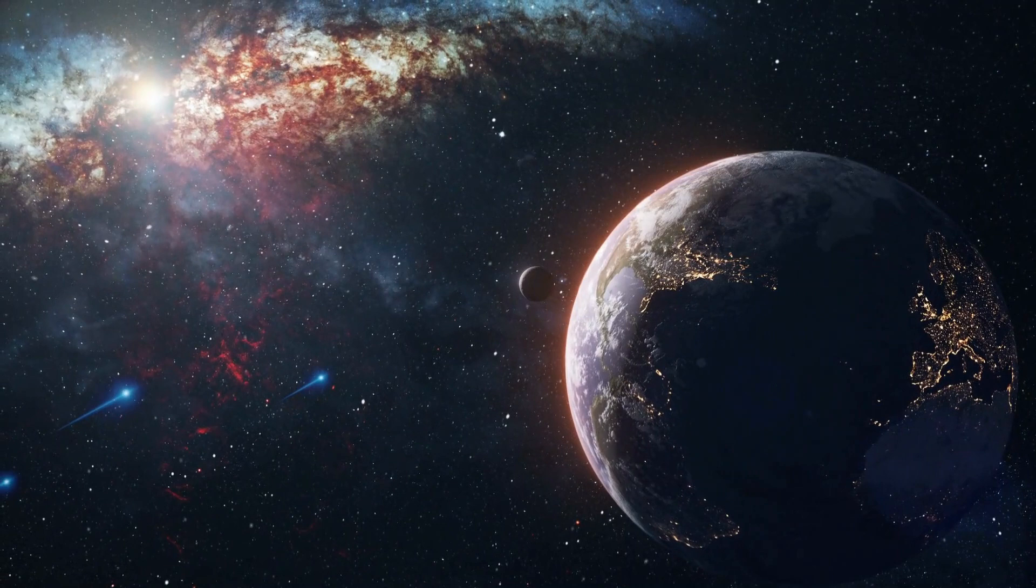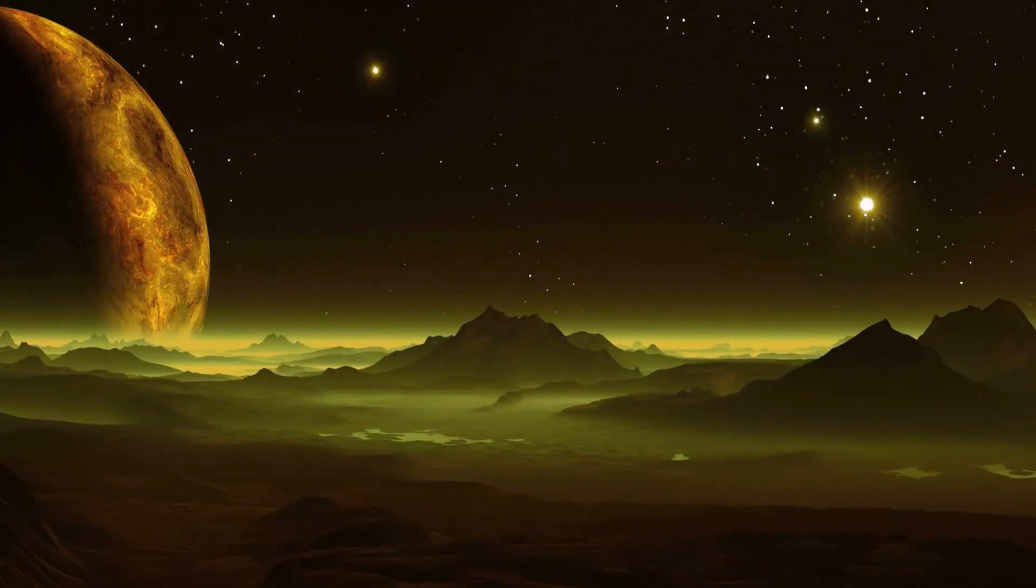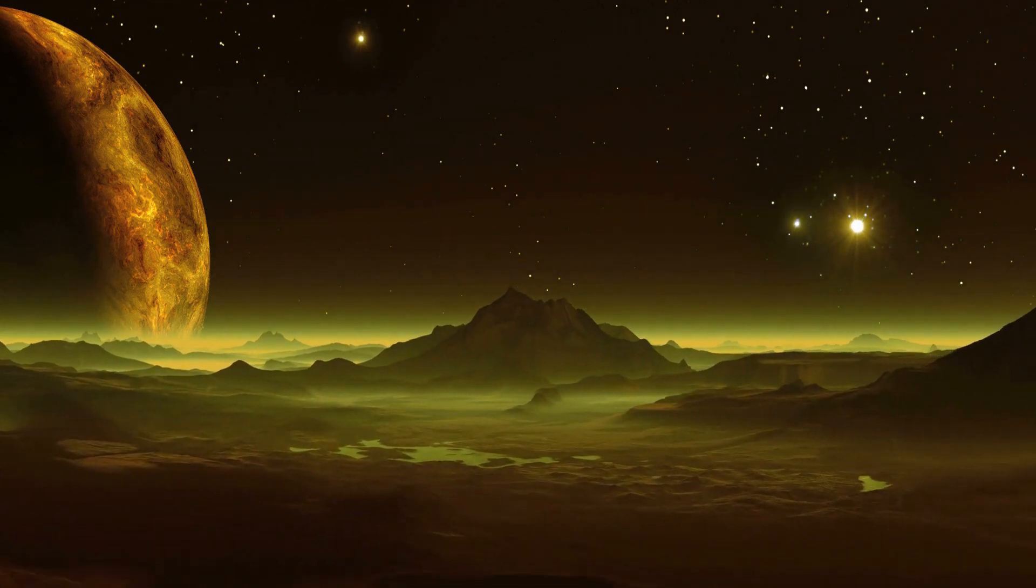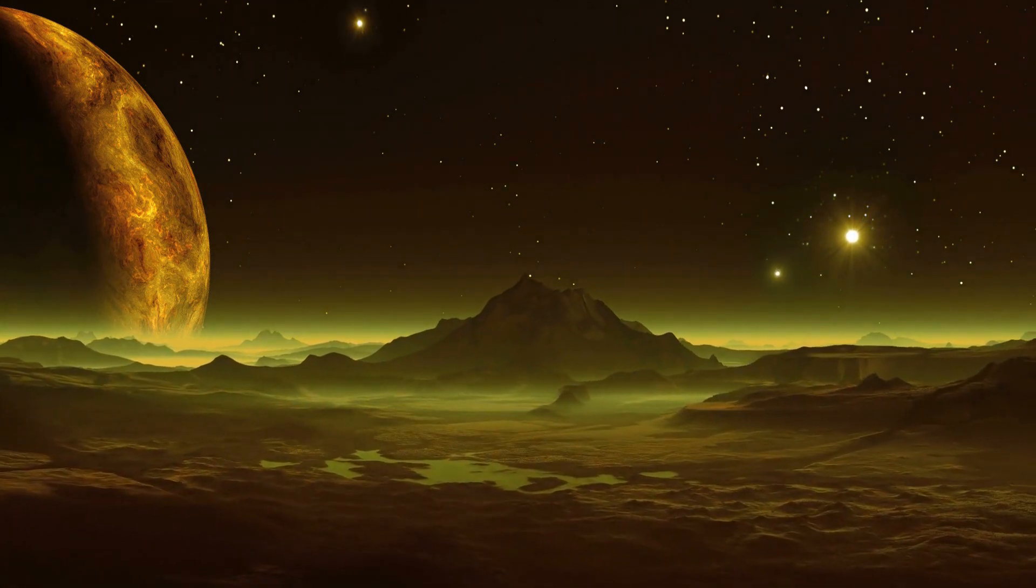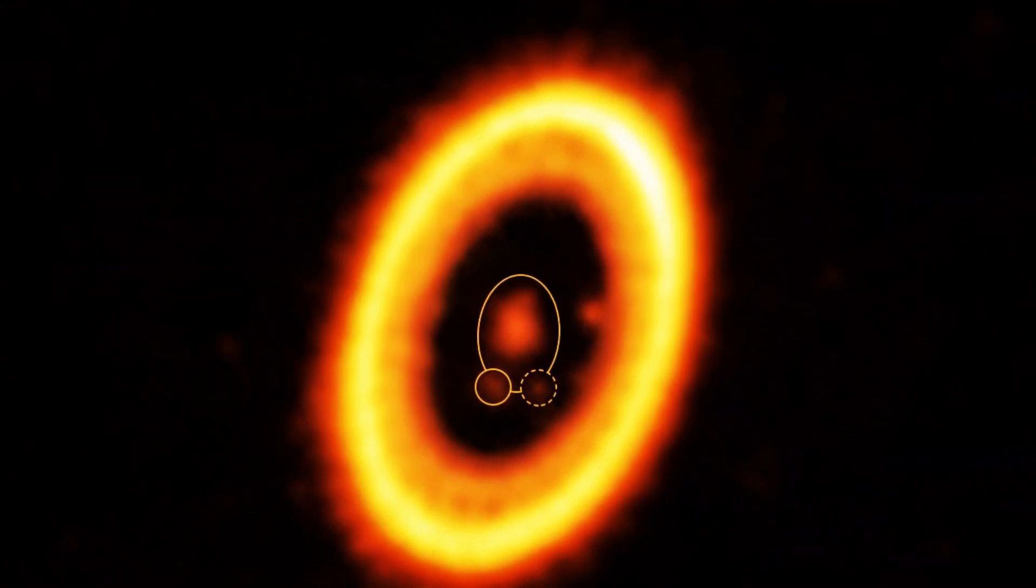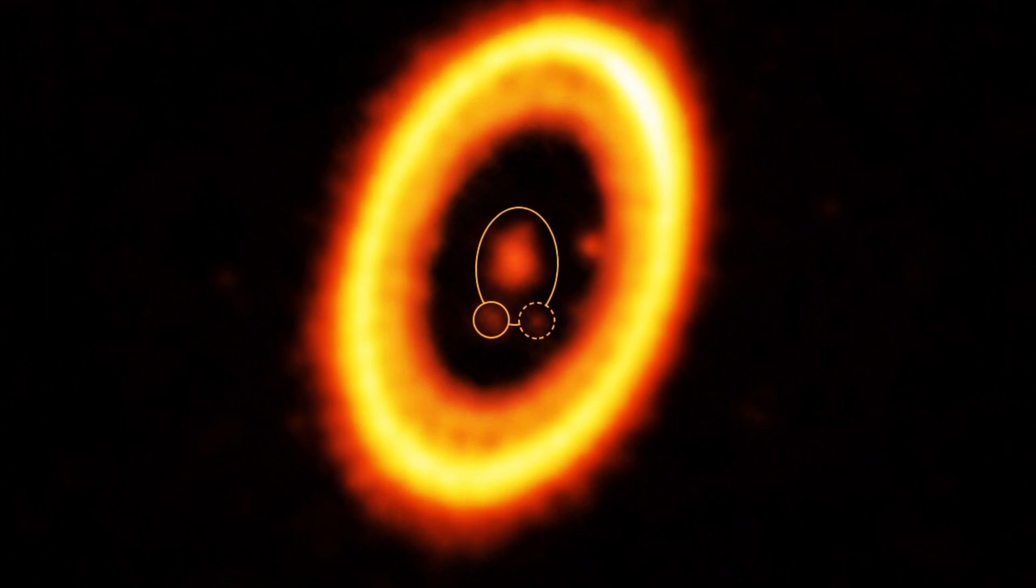This central zone is where planets like Earth were born in our solar system. So if rocky planets were to form in PDS 70's central zone, they would have access to a big water reservoir, which could make them more habitable in the future. How awesome is that? PDS 70 is like a cosmic playground with two gas giant planets, PDS 70b and c, farther out.